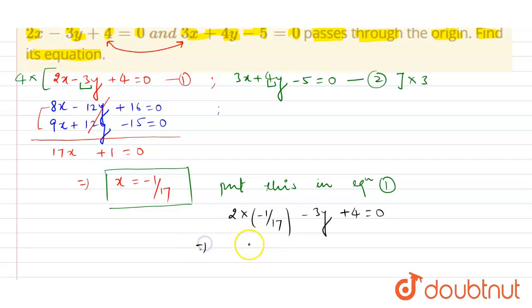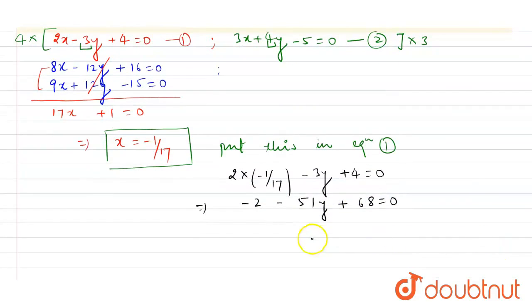And this will give you -2/17 - 3y + 68/17 = 0 on taking LCM. From here students, you can say 51y is nothing but 66, which will give you y = 66/51.